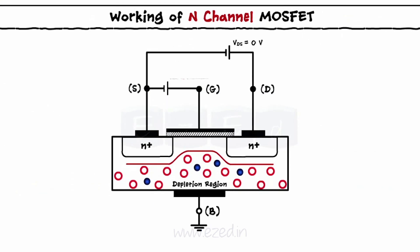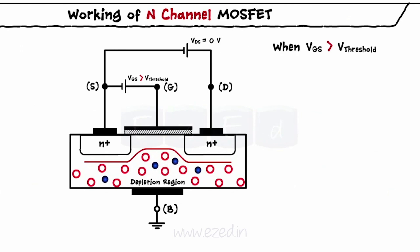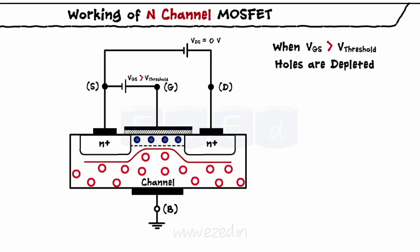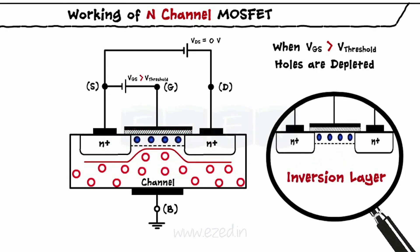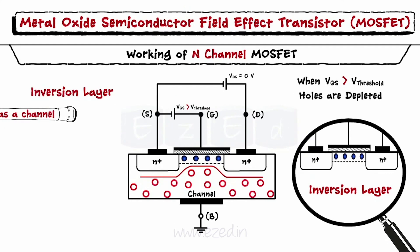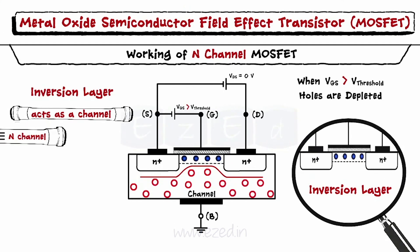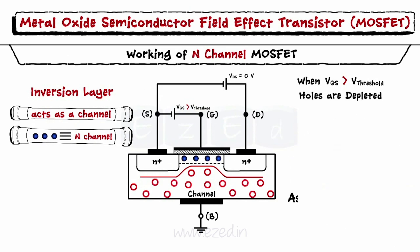When we increase the gate voltage above a threshold value, all holes get depleted from the depletion region and the gate attracts all the minority charge carriers. This forms the inversion layer near the gate, which contains only electrons. This layer acts as a channel, and as it contains only electrons, it is called the N-channel. As this channel enhances due to increase in the gate voltage, this FET is called enhancement type MOSFET.